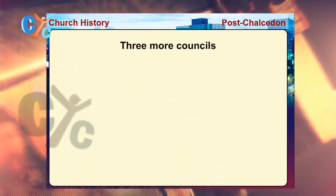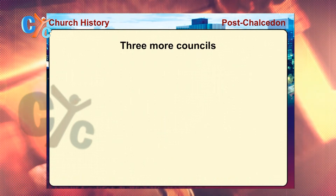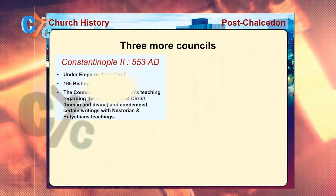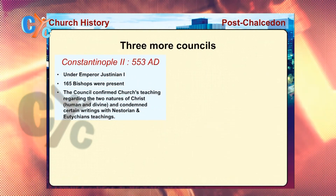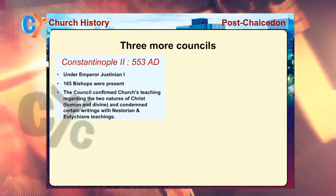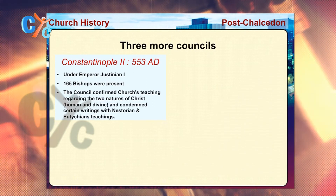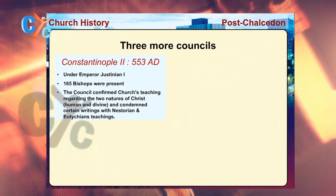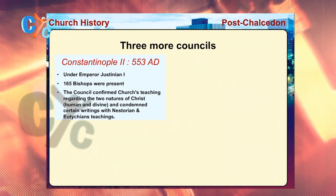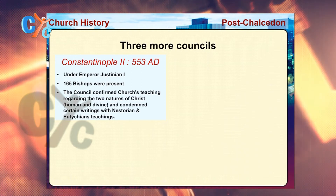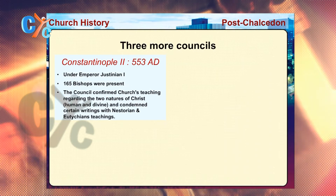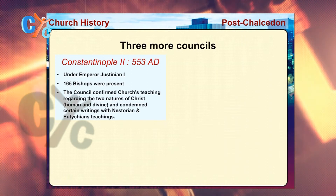Later on, the Chalcedonian party held three more ecumenical councils. The first of these — the fifth ecumenical council according to their faith — is the Council of Constantinople the Second, held in 553 AD. This council confirmed the church's teachings regarding the two natures of Christ united in one person, and condemned certain writings related to Nestorius and Eutyches.